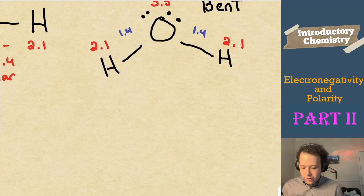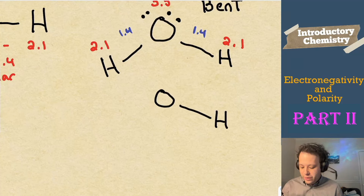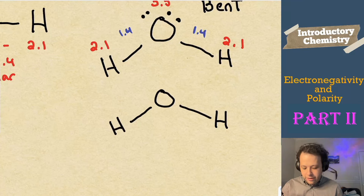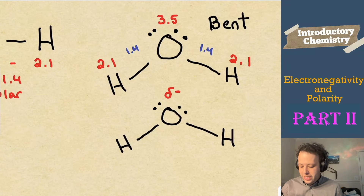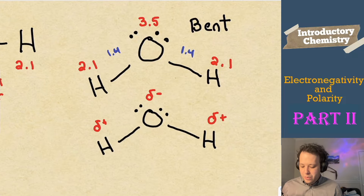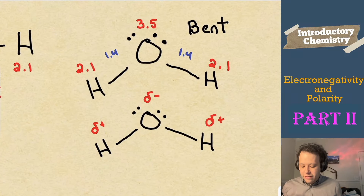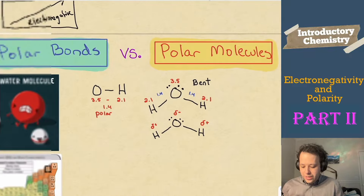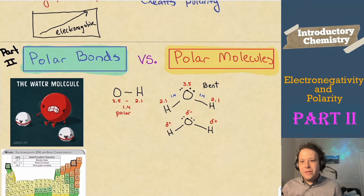Let's redraw water. The first way to illustrate polarity is using the delta symbols. A delta negative goes on oxygen because it has a higher electronegativity value, and each hydrogen gets a delta positive, telling you that the unevenness of this molecule is going to be more in favor of the oxygen.